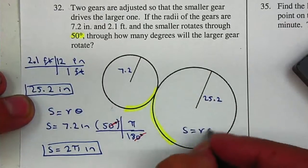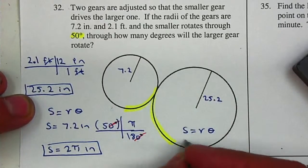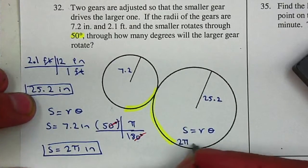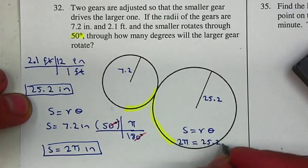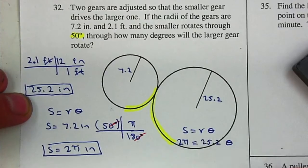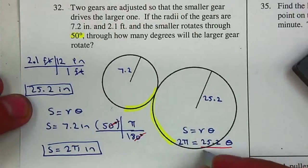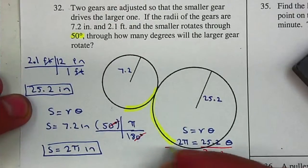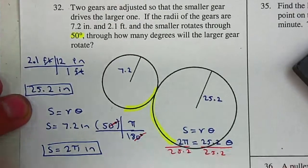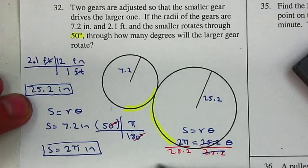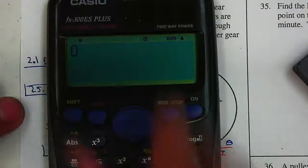So we have S equals r theta. S will be 2 pi because they share the same arc length. R is 25.2, and theta is what we're looking for. So I can solve for theta by dividing by 25.2. The 25.2 cancels out. So theta equals 2 pi divided by 25.2.